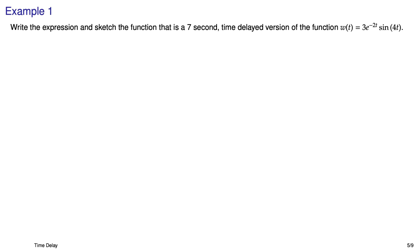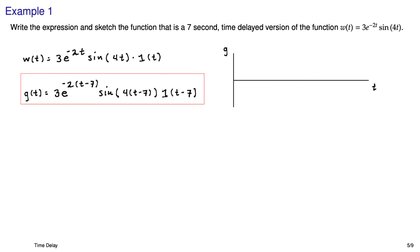So here's the first example. It's not a Laplace transform. It's just an exercise in writing a time delayed function. So w of t is not delayed in time and we just want to delay it by seven seconds, but also sketch it. And here's g that is delayed in time, just replacing t with t minus seven. Here's the sketch of it and it's very classic time delay looking thing. It's zero all the way up until seven seconds and then it kicks into gear.